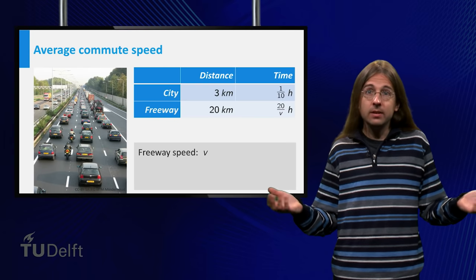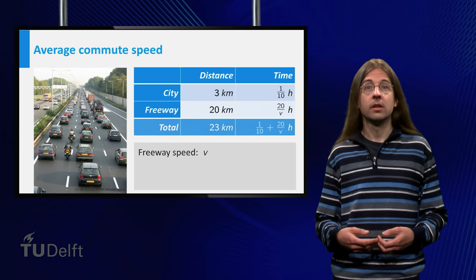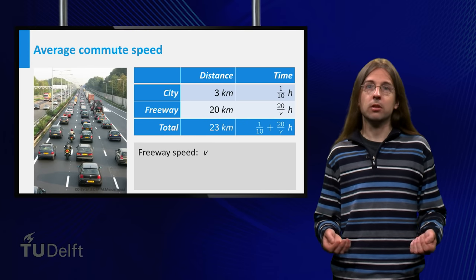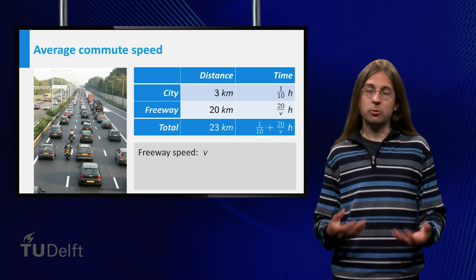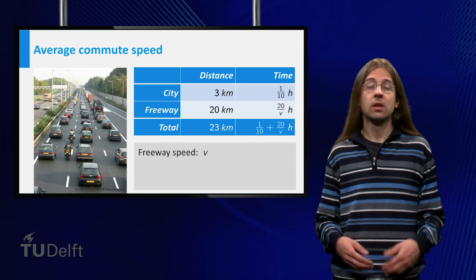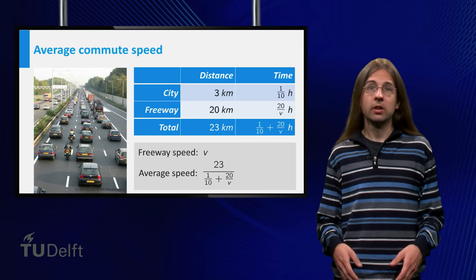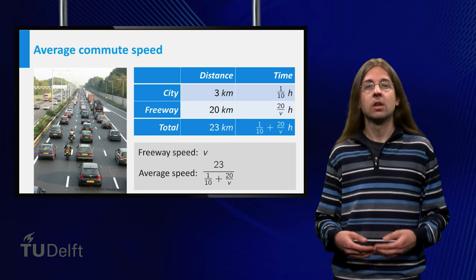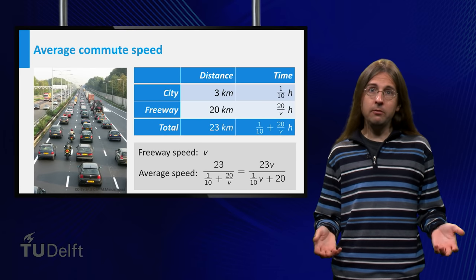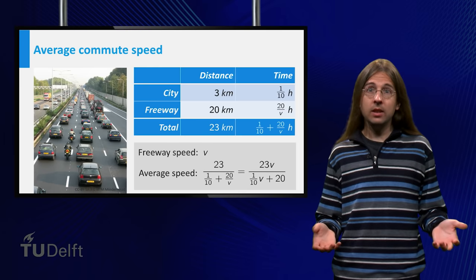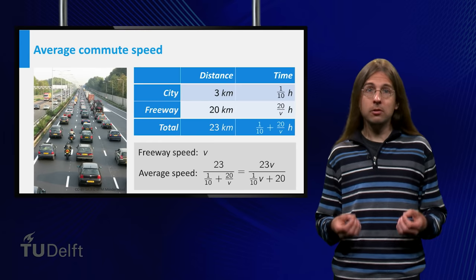What will be my average speed? Well, it is total distance divided by total time. The distance is 23 km, the time spent is 1 tenth of an hour for the city part, and 20 over v for the part on the freeway. Thus, the average speed is 23 over (1 tenth plus 20 over v). Multiplying both numerator and denominator by v, we obtain 23v over (1 tenth · v plus 20). This rational function is a quotient of two linear polynomials.